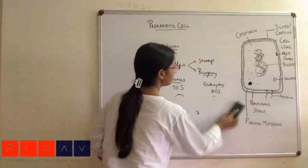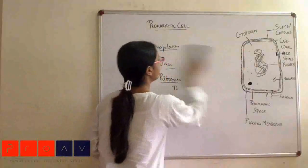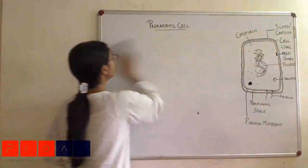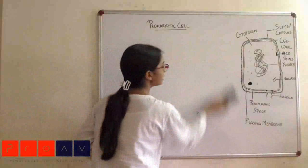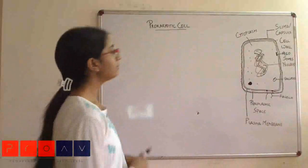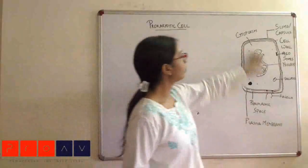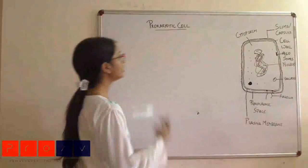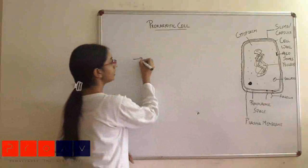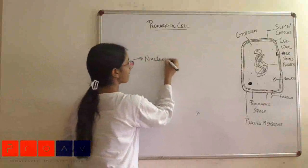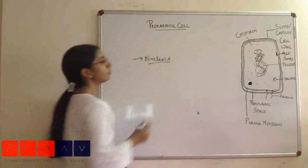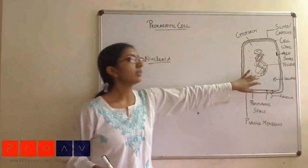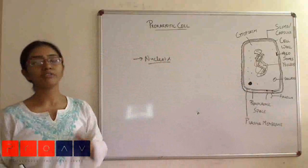So moving from the cytoplasm, we move to the nuclear region. Since prokaryotes do not have a structured nucleus kind of a thing, the nuclear material exists as just a looping of DNA that is called as nucleoid. There are no histone proteins that are present, no histone proteins are associated with this kind of a structure. Otherwise they would have been forming like a chromosome.